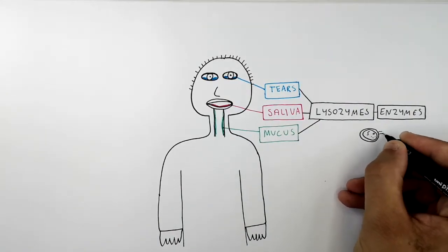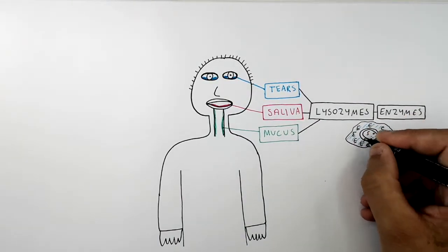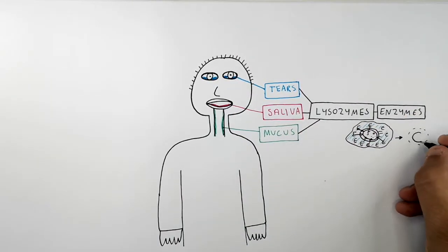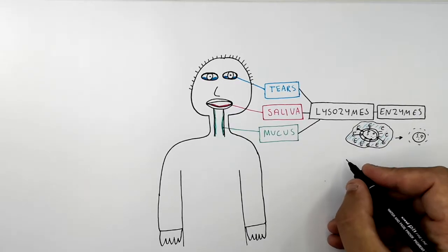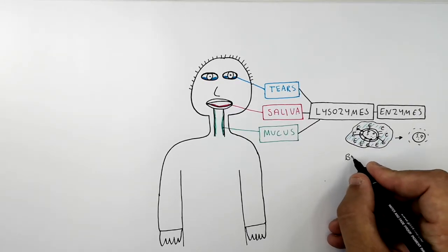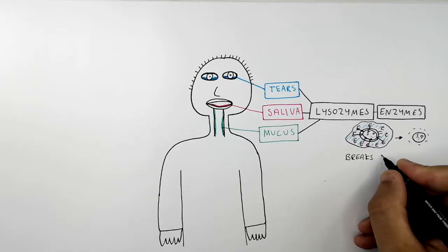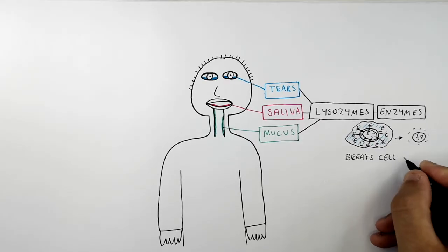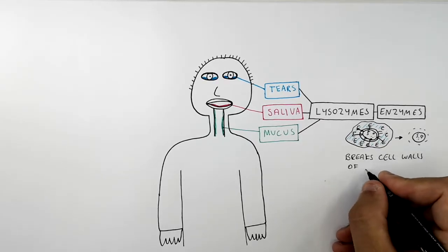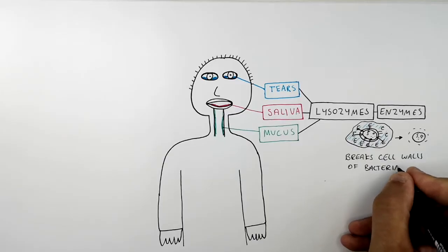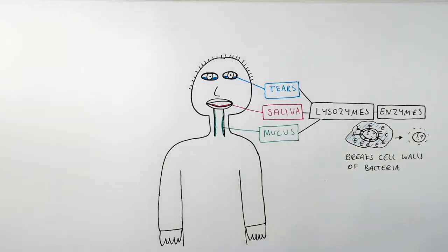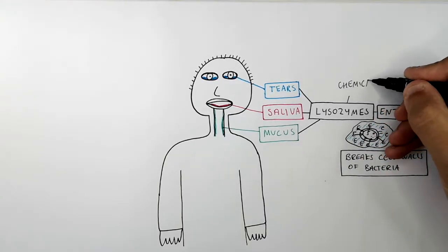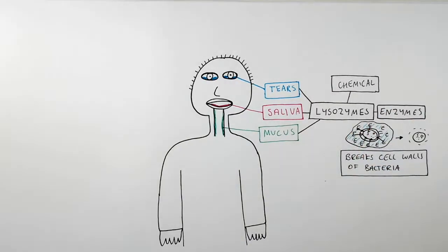What lysozymes do is break down the cell walls of bacteria. So if you were to have bacteria in your eyes, your mouth, or in your trachea, some of them are going to have their cell walls broken down by the lysozymes. Lysozymes are a chemical defence — not a physical defence.